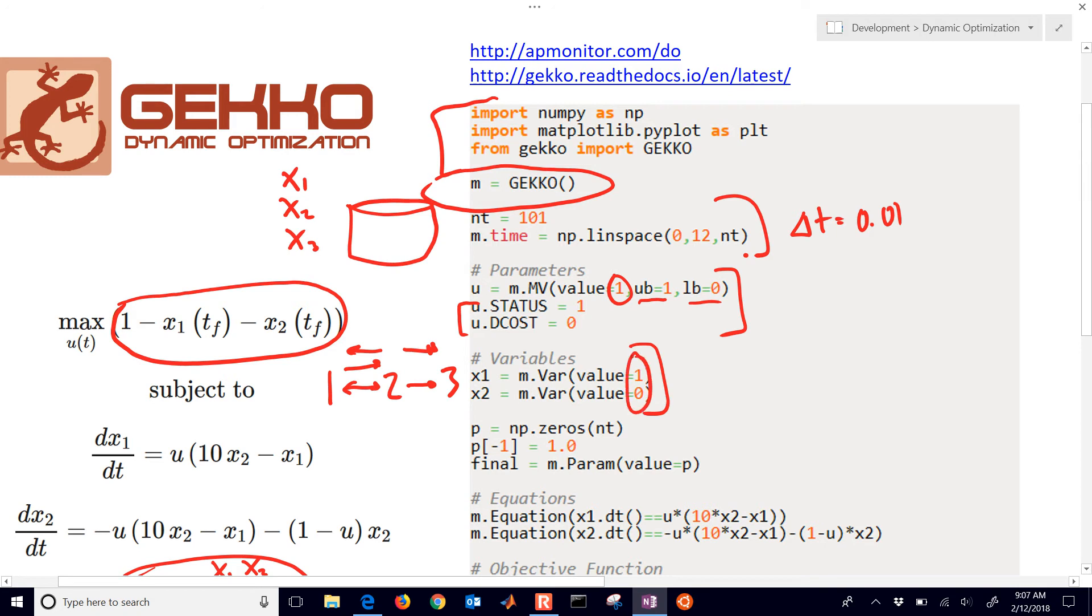Here are some variables with my initial conditions there, 1 and 0. And then I also set up my final parameter here. So it's 0 everywhere. And just at the end, it's equal to 1. And that's just so I can optimize these just at the final point.